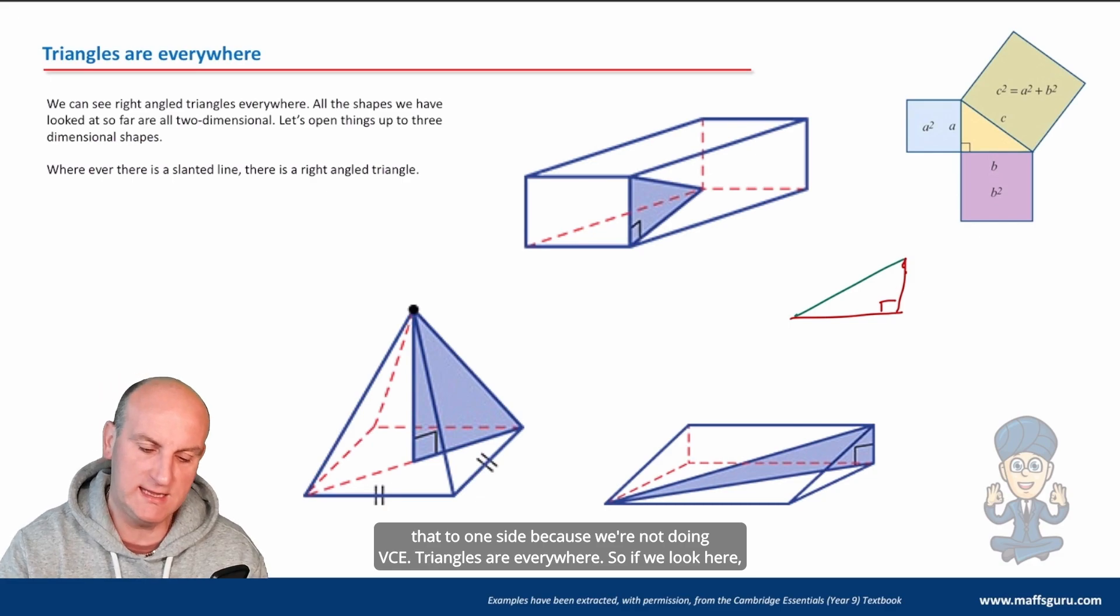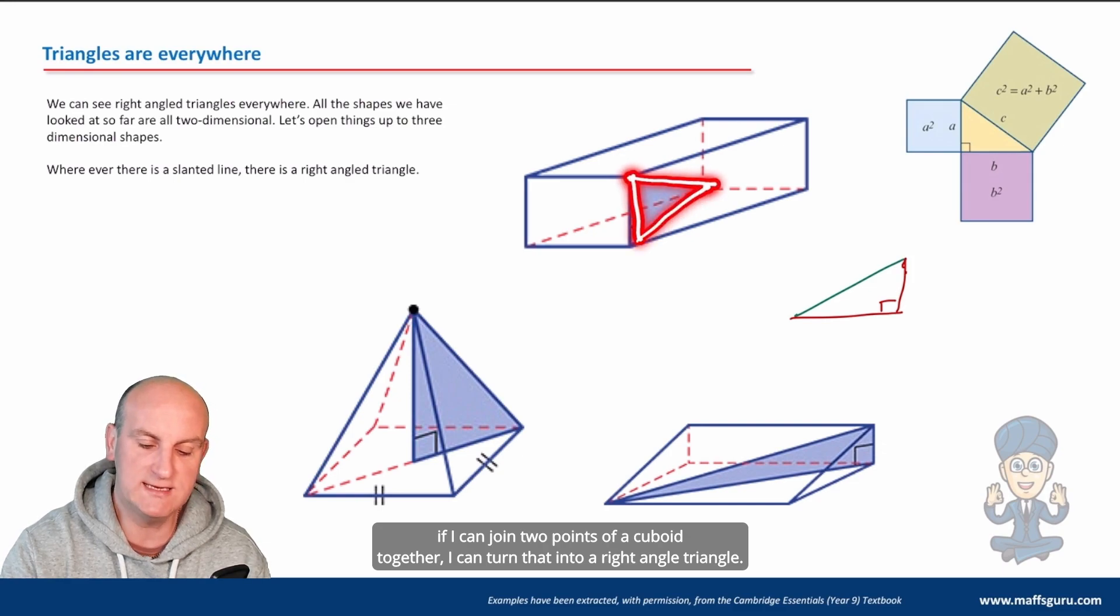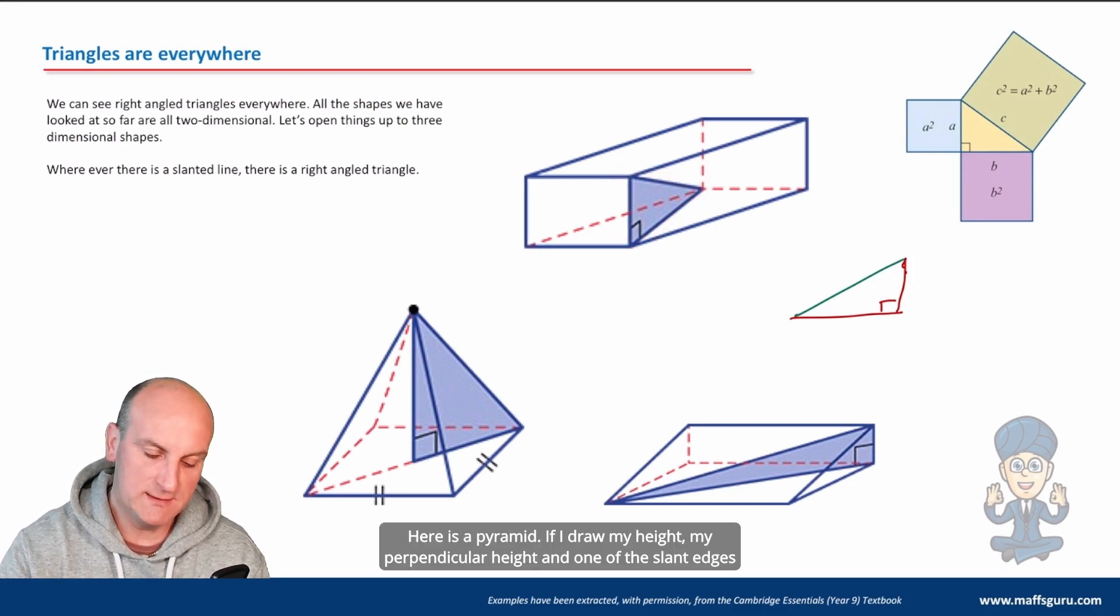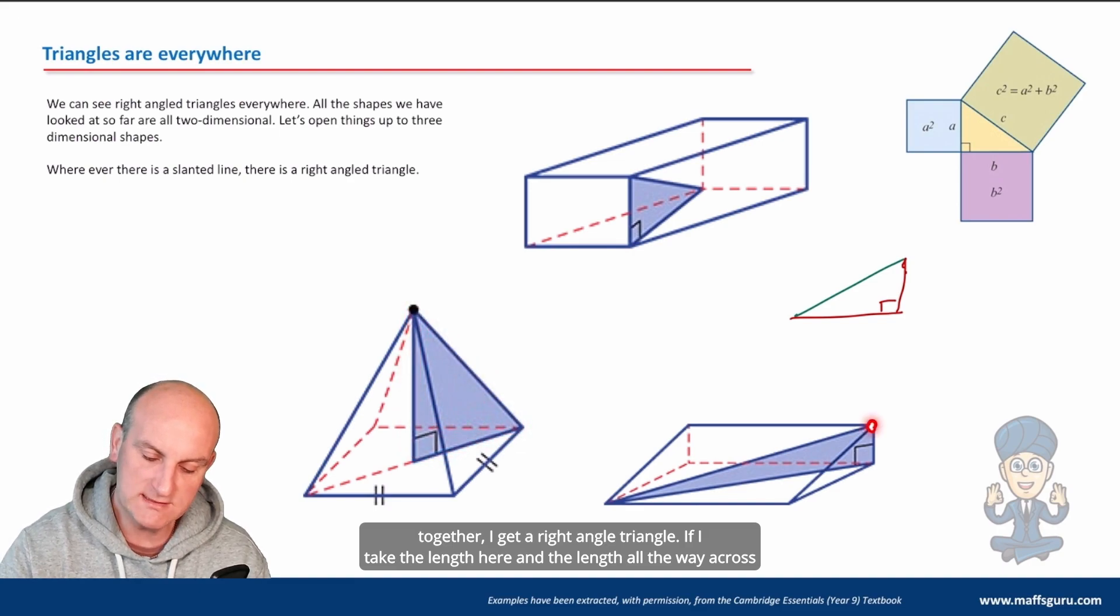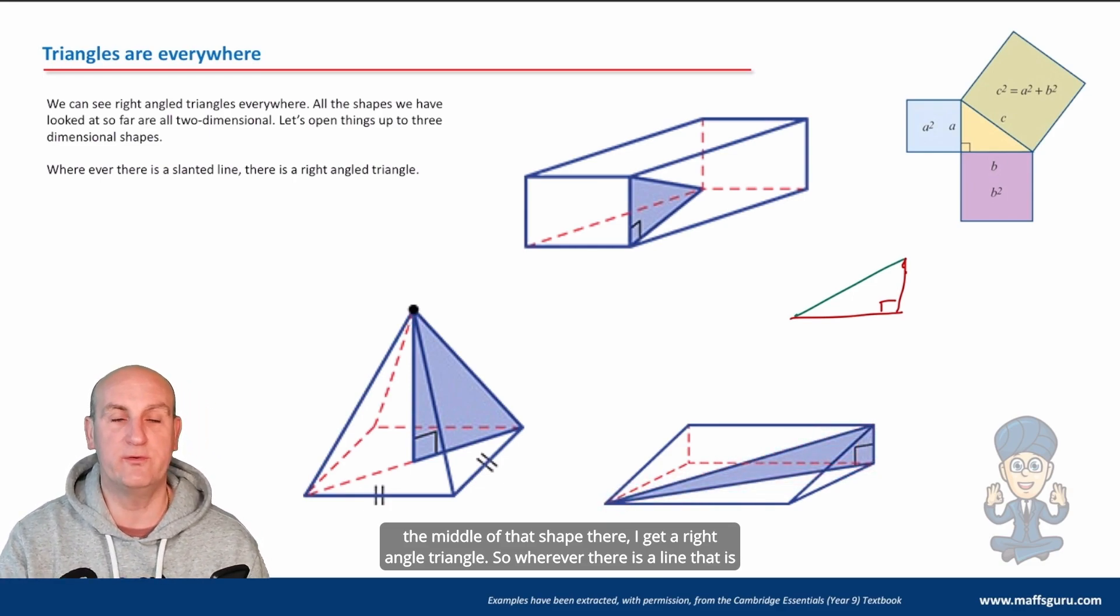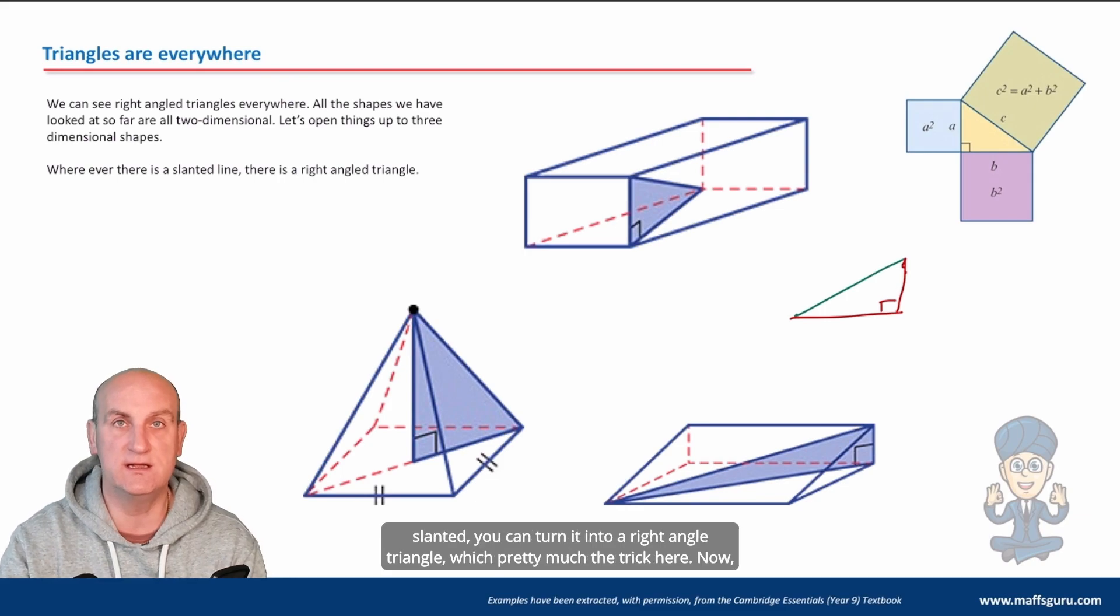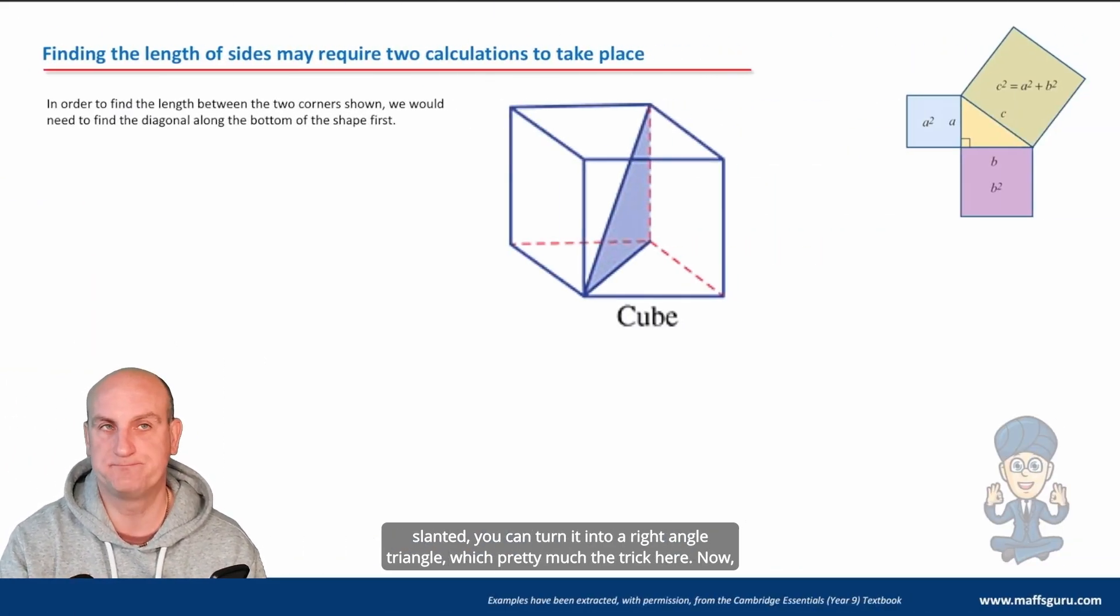Triangles are everywhere so if we look here if I can join two points of a cuboid together I can turn that into a right angle triangle. Here is a pyramid if I draw my height, my perpendicular height and one of the slant edges together I get a right angle triangle. So wherever there is a line that is slanted you can turn it into a right angle triangle which is pretty much the trick here.